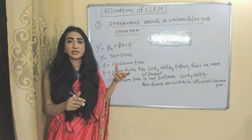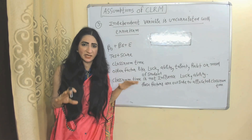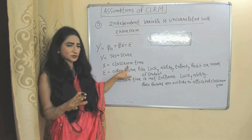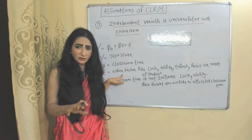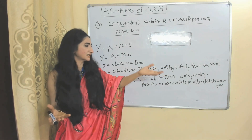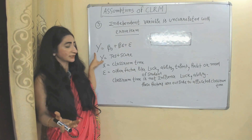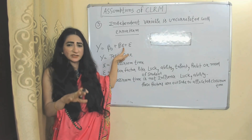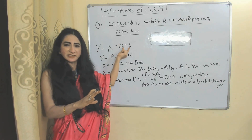Third assumption: the independent variable is uncorrelated with the error term. For example, if the dependent variable is test score and the independent variable is class attendance, the error term captures other factors like luck, ability, talent, habit, or mood. All these factors influence the dependent variable, but they don't correlate with the independent variable included in the model.